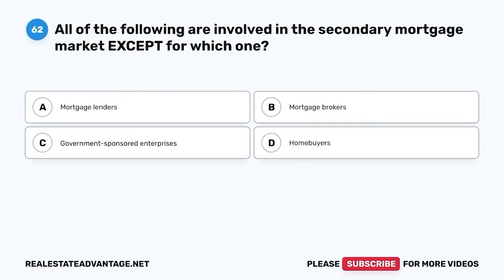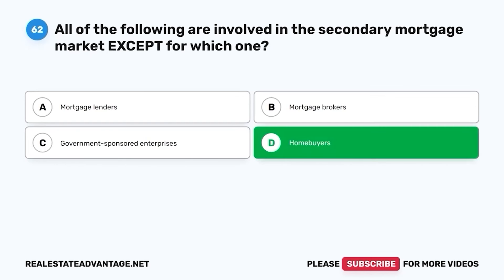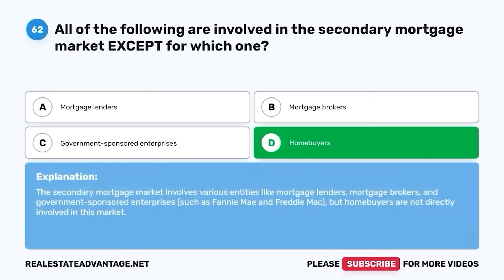Question 62. All of the following are involved in the secondary mortgage market, except for which one? A. Mortgage lenders. B. Mortgage brokers. C. Government-sponsored enterprises. D. Homebuyers. The correct answer is D. Homebuyers. The secondary mortgage market involves various entities like mortgage lenders, mortgage brokers, and government-sponsored enterprises such as Fannie Mae and Freddie Mac, but homebuyers are not directly involved in this market.